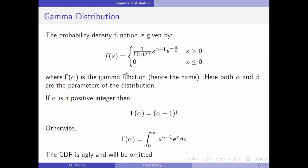So what's this gamma thing here? This is the gamma function, and that's where the name of the distribution comes from. Both alpha and beta are parameters of this distribution. If alpha is a positive integer, then gamma of alpha is just alpha minus one factorial. Easy to calculate - might be a big number, but it's easy to calculate.